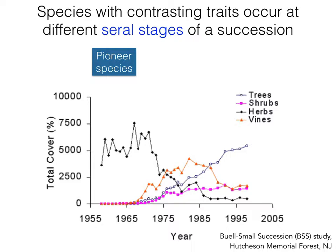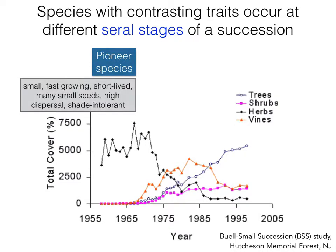Pioneer species are fairly small, fast-growing, short-lived species. They produce many small seeds, have very good dispersal, and tend to be quite shade tolerant. This should sound familiar in terms of life history traits — pioneer species tend to fit the classic r-selected type: those putting a lot of resources into reproduction and dispersal. They're able to arrive first because they have good dispersal, and can colonize new areas that open up from a disturbance or clearing of an agricultural field.